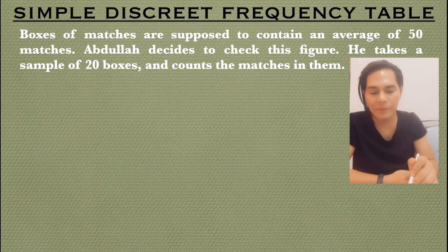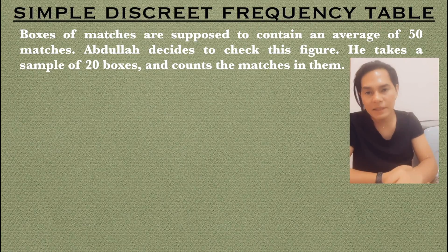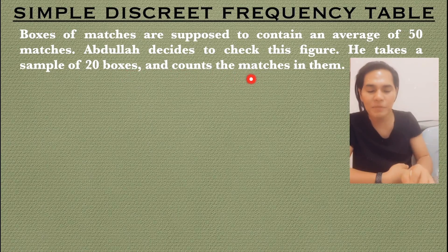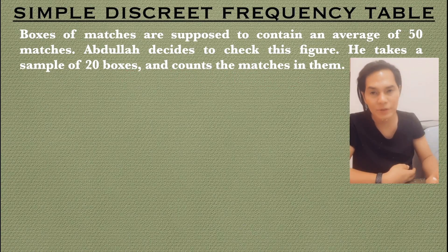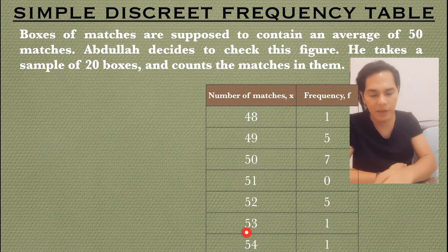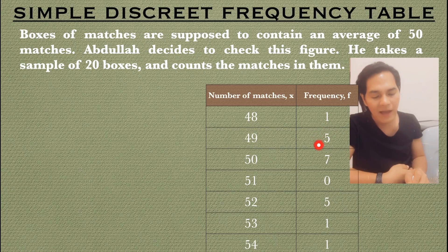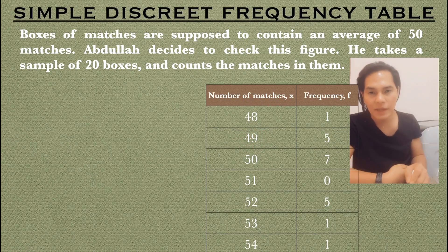Let's start with an example of a simple discrete frequency table. Boxes of matches are supposed to contain an average of 50 matches. Abdullah decides to check this figure — he takes a sample of 20 boxes and counts the matches in them. The results are written in a table with 'number of matches' (48, 49, 50, and so on) and the corresponding frequency (1, 5, 7, 0, 5, and so on), meaning there are five boxes with 49 matches inside.